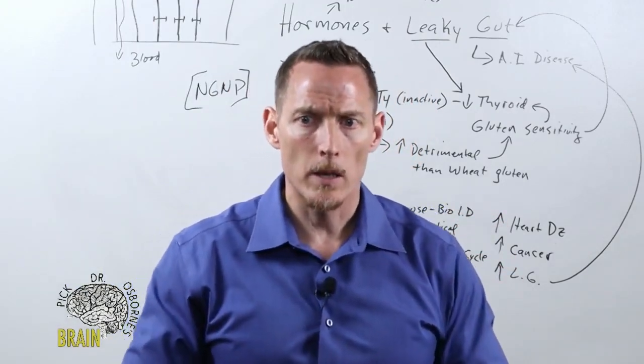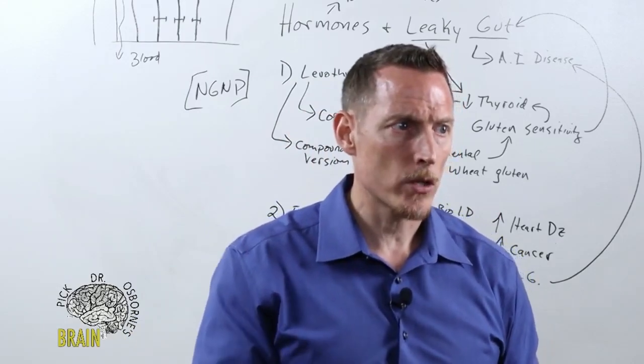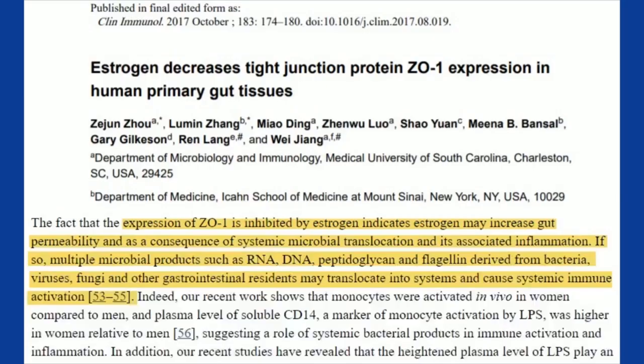The fact that the expression of zonulin-1 is inhibited by estrogen indicates estrogen may increase gut permeability and as a consequence of systemic microbial translocation and its associated inflammation. If so, multiple microbial products such as RNA, DNA, peptidoglycan, and flagellin derived from bacteria, viruses, fungi, and other gastrointestinal residents may translocate into the system and cause systemic immune activation.